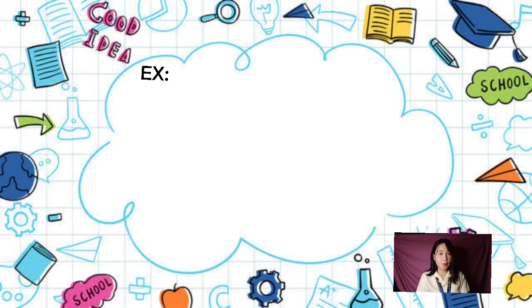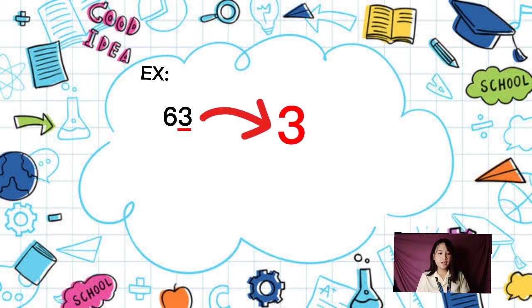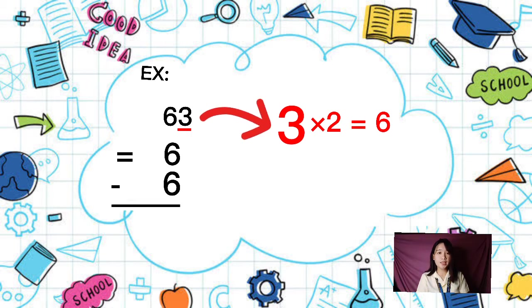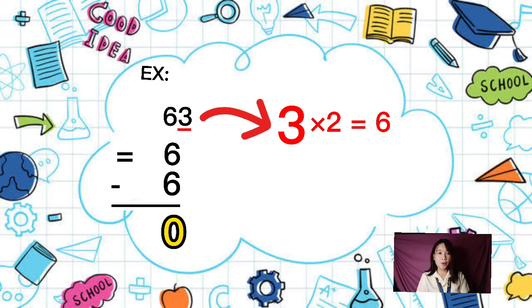Another example: 63. The last digit is 3, so 3 times 2 is 6, and 6 minus 6 is 0. Since 0 is divisible by 7, 63 is divisible by 7.